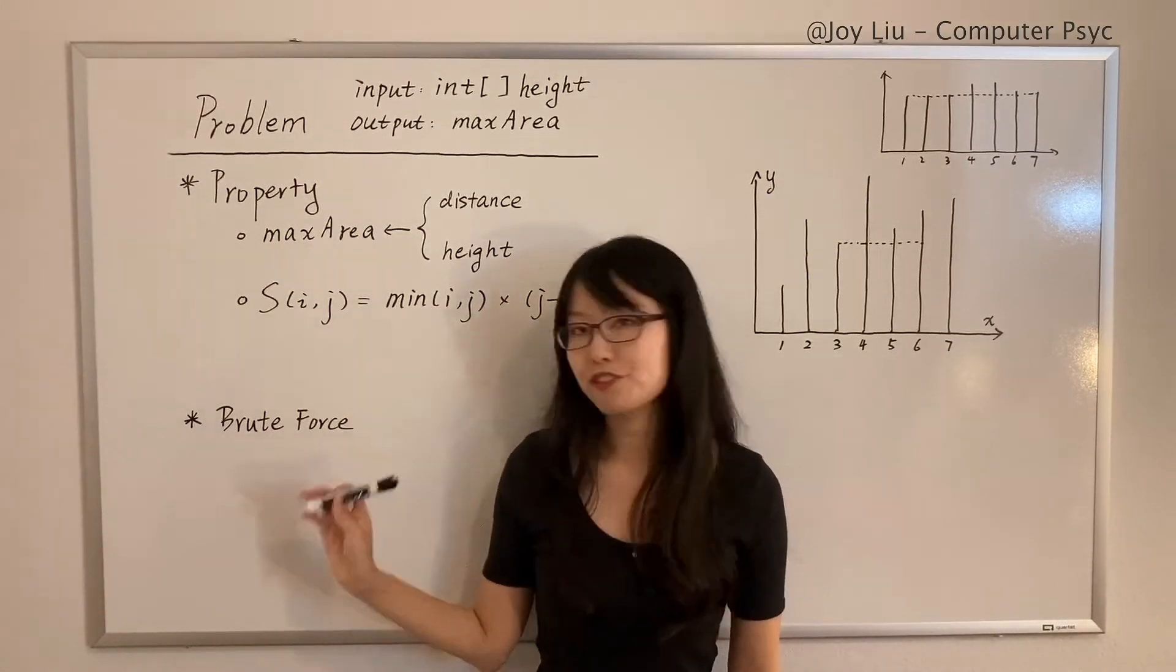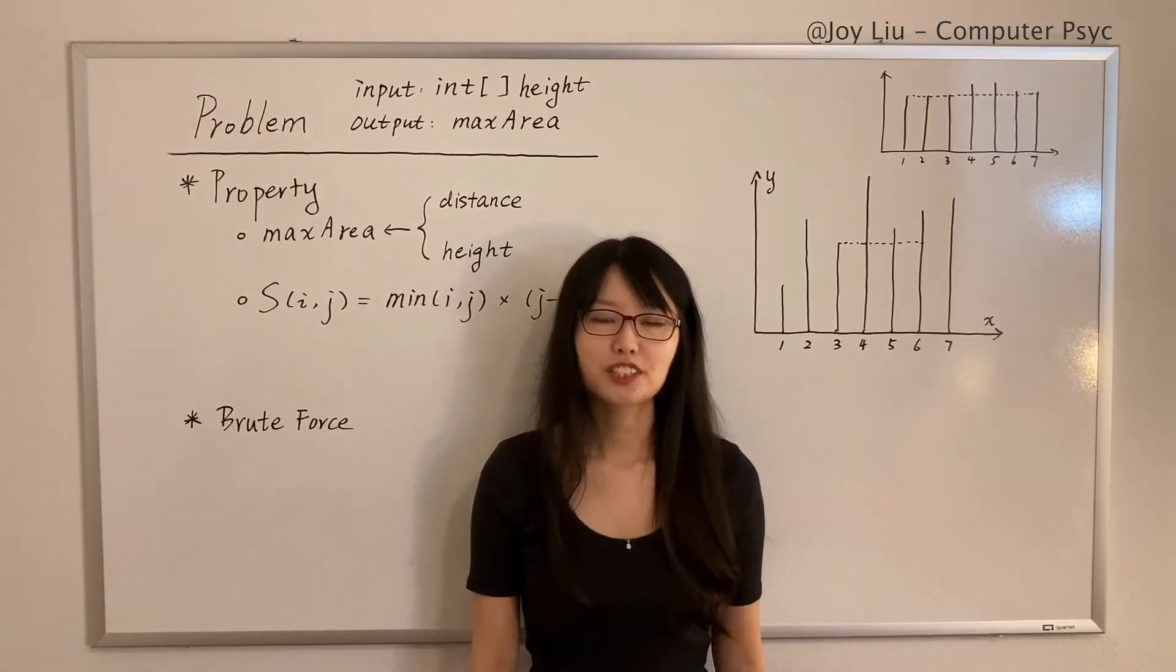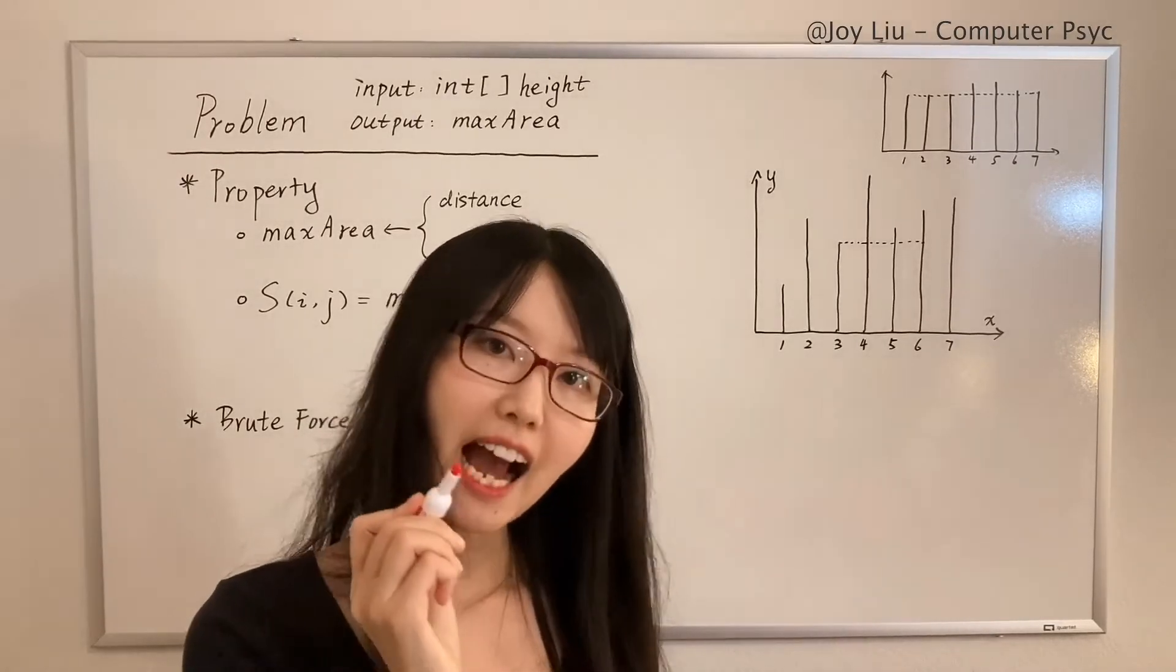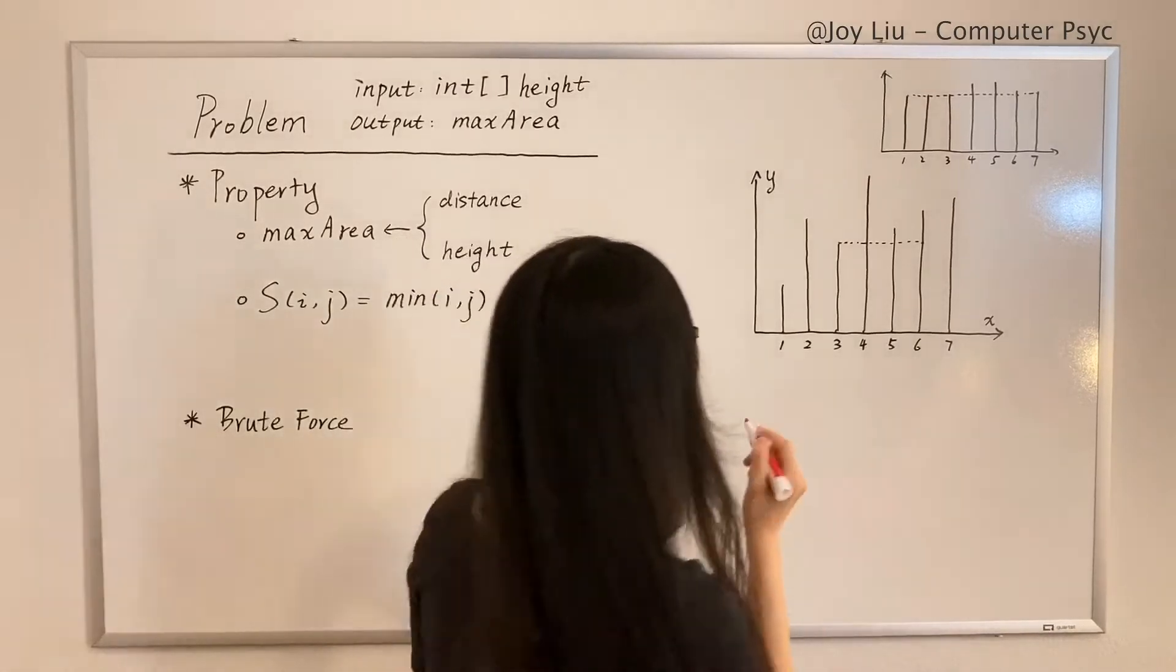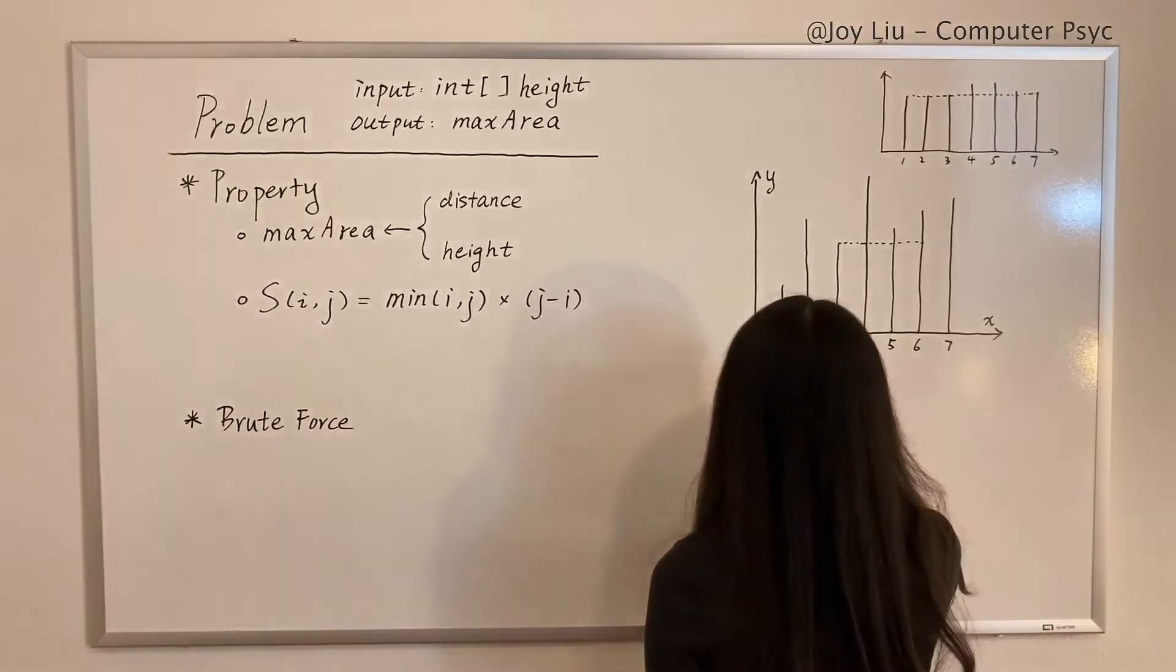So we will use this formula to calculate the area of containers. How to find the max area? Let's start with the brute force solution first. This idea is very straightforward: we just need to calculate all possible containers and find the max. We need to use two pointers, i and j. i starts from one.